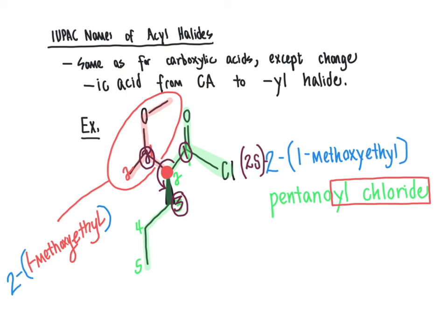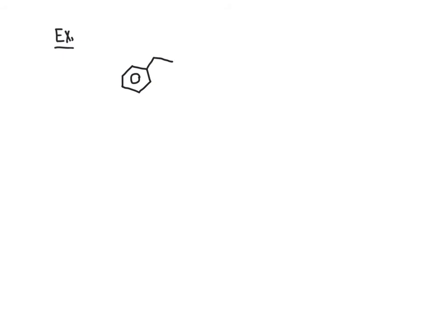That is the rundown of how we name acyl halides. Let's do one additional example to make sure we're up to speed. In this molecule, of the groups directly bonded to the aromatic ring, the acyl halide group takes priority for naming — it is higher ranking than a nitro group or an alkyl group. So the parent name will incorporate the aromatic ring and the acyl halide, while the nitro group and the methyl group will be named as branches.